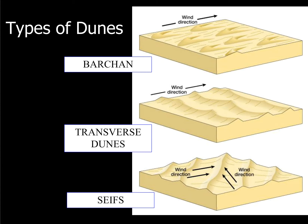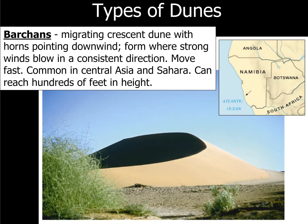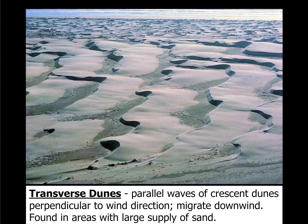There are a variety of types of sand dunes that can form in arid regions. Barchan dunes are migrating, crescent-shaped dunes. Their horns point downwind. They form where strong winds blow in a consistent direction and they move very fast. They are common in Asia and in the Sahara, and can reach hundreds of feet in height. Transverse dunes are parallel waves of crescent dunes that form perpendicular to the wind direction and migrate downwind. They are found in areas with a large supply of sand.